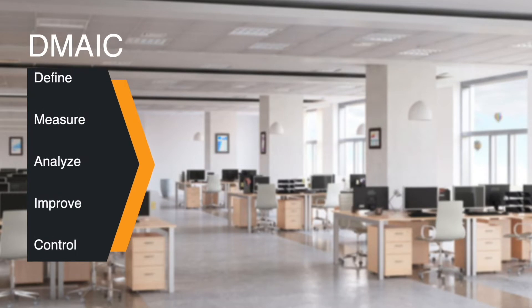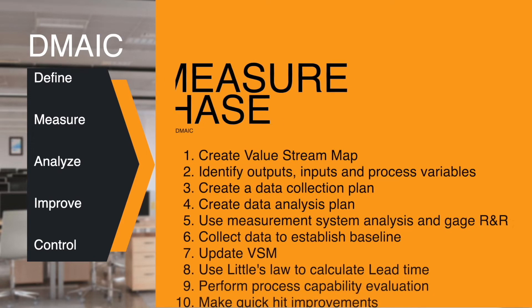The second phase of the DMAIC process is Measure. In this step, you will document the current state of the process that you're targeting for improvement. This is also helpful for you to know where you started so that you can see if your process succeeded in achieving the improvement set in the Define phase. Although many undisciplined Lean Six Sigma practitioners tend to skip this step and consider it a waste of time, documenting current status is critical for a successful improvement project.